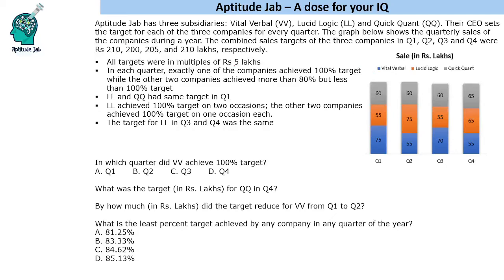In each quarter, exactly one of the companies achieved 100% of its target, while the other two companies achieved more than 80% but less than 100% of their target. So if we look at the three sales figures, only one of them represents a 100% target achievement, and the other two are less than 100%.